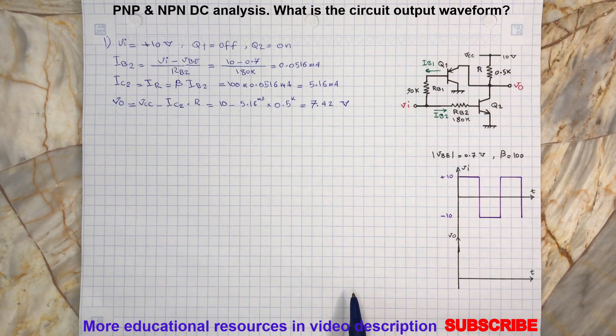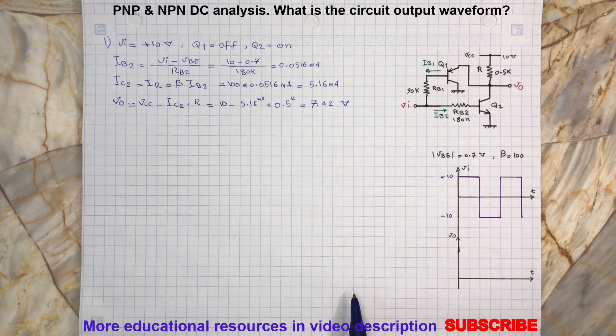However, transistor Q1 will turn on because now it is forward biased and its emitter-base junction will conduct, and there will be a current flowing through its emitter and base.